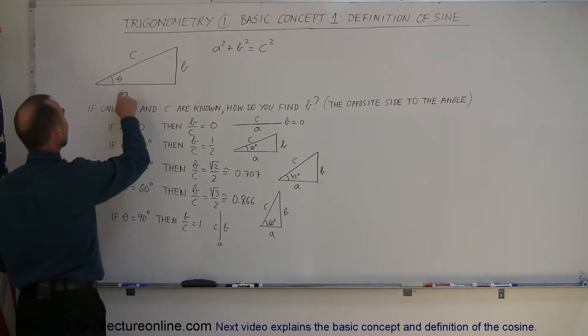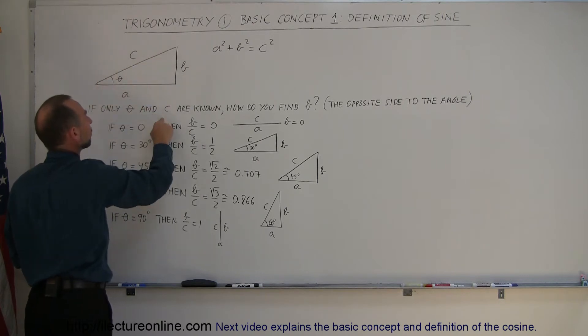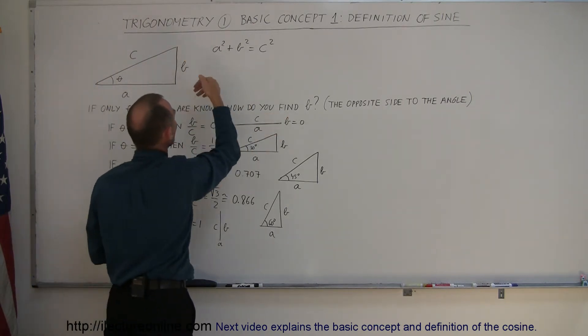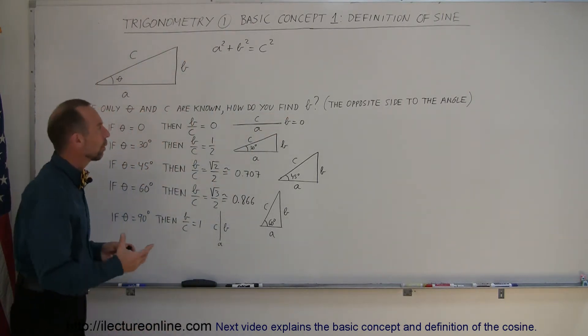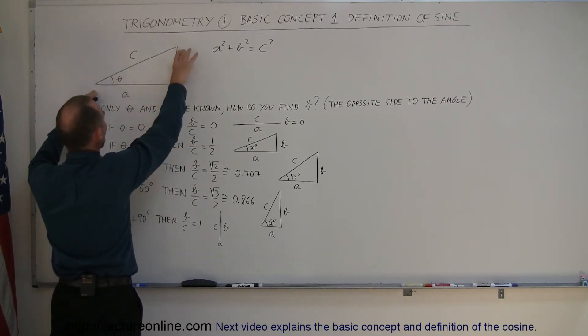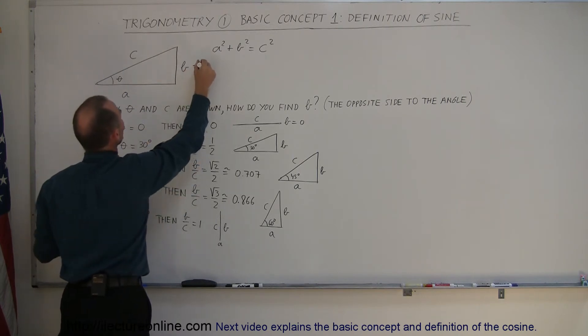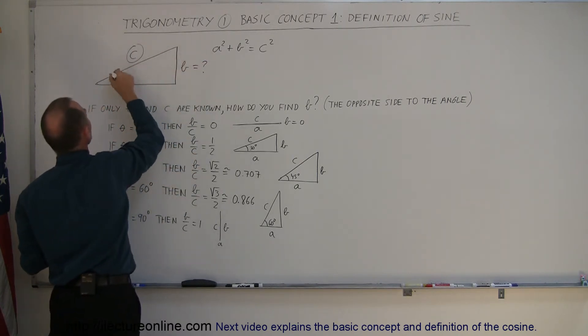For example, if only the angle is known and we know the length of C, the hypotenuse, how do we find the length of B, which is the opposite side to the angle? This is the adjacent side of the angle. How do we find B if we only know C and the angle? Pythagorean theorem no longer helps.